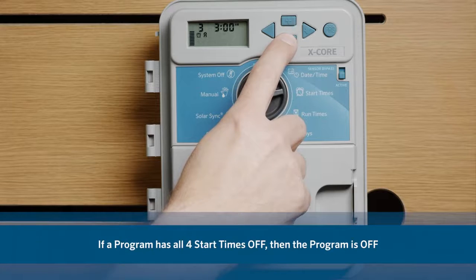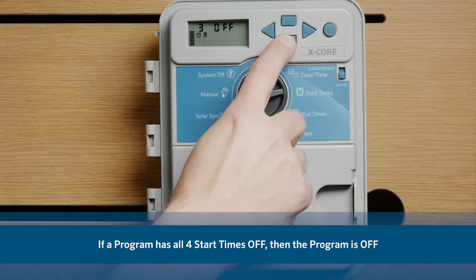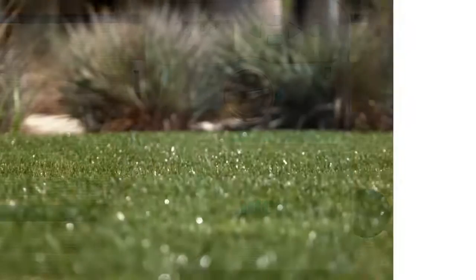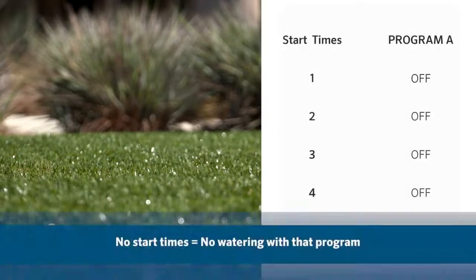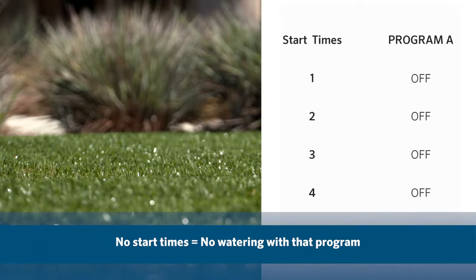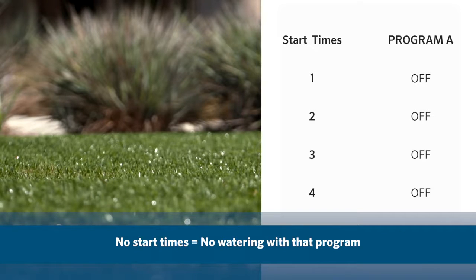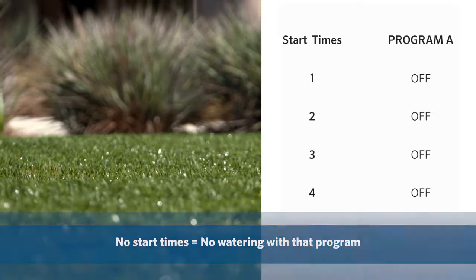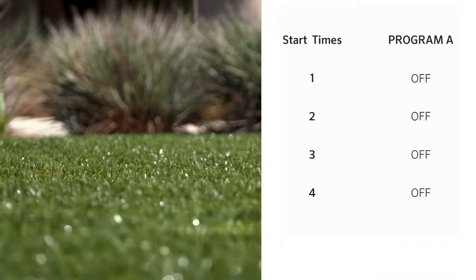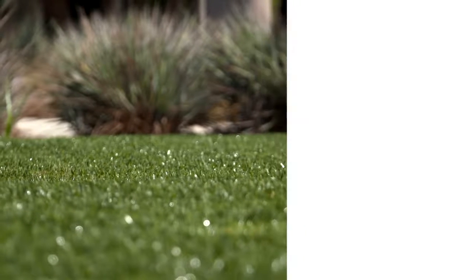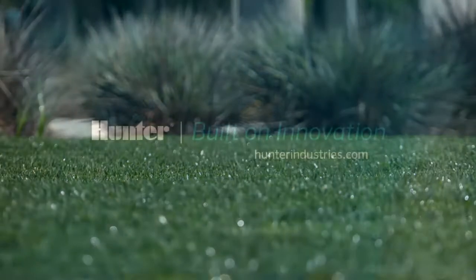If a program has all 4 start times turned off, then the program is off — all other program details are retained. Because there are no start times, there will be no watering with that program. This is a convenient way to stop watering on one program only without turning the dial to the off position.